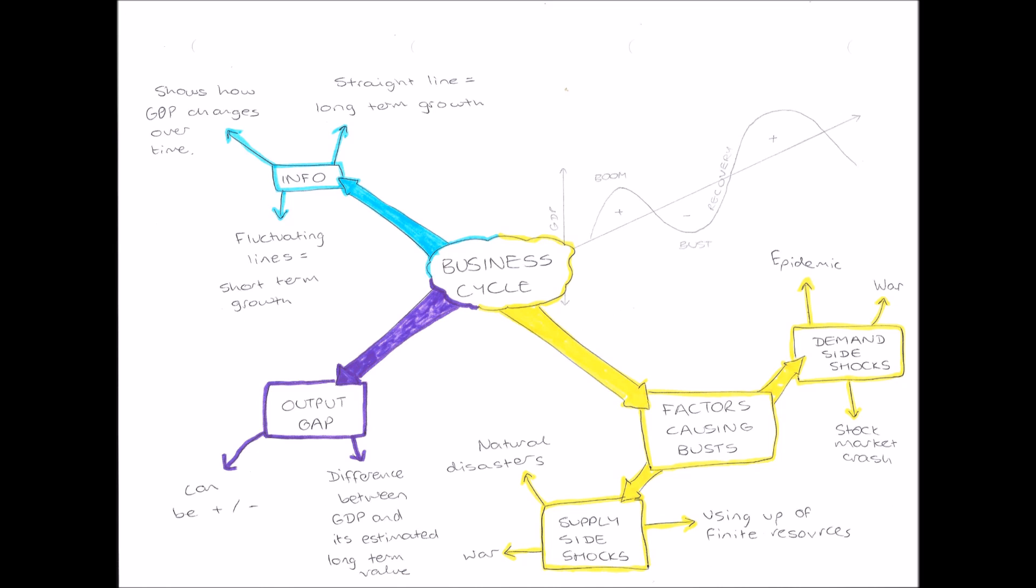And supply side shocks. An example of a supply side shock is also war, because in war things such as factories, machinery and resources get destroyed. So therefore there isn't enough supply to produce anymore. Therefore businesses can't produce and sell their goods, therefore they can't make profit. So therefore the economy crashes, there is a bust.